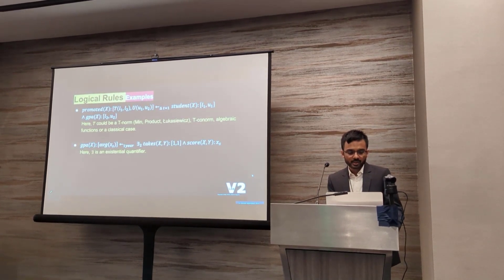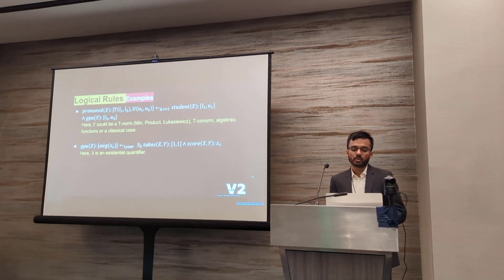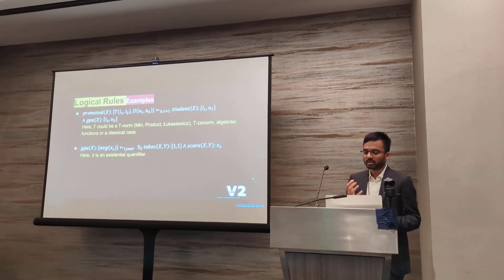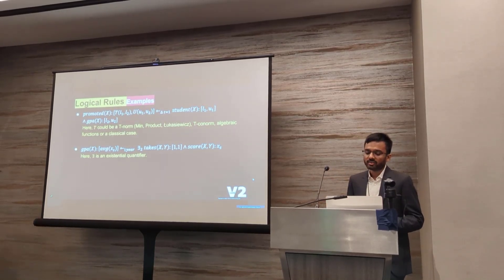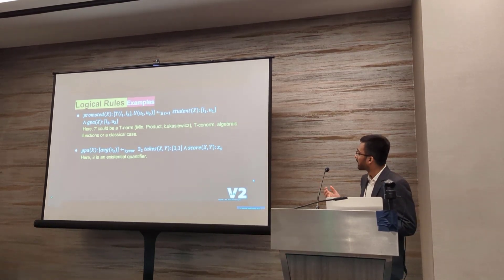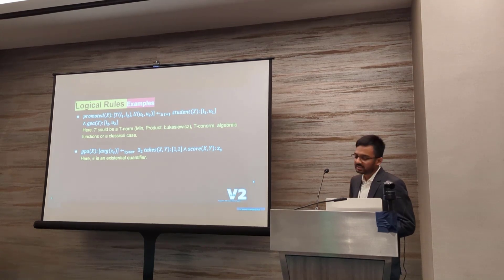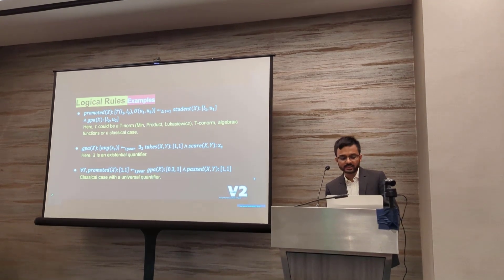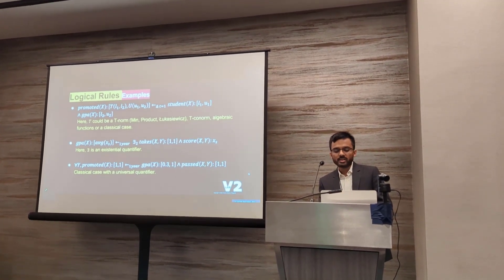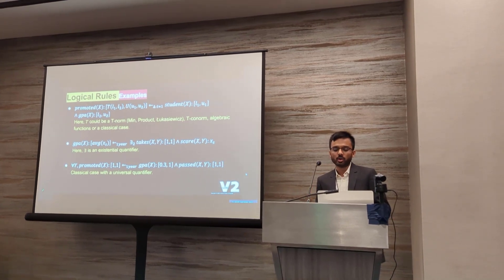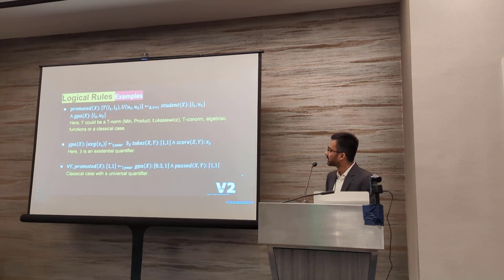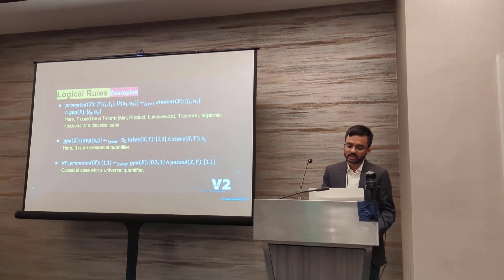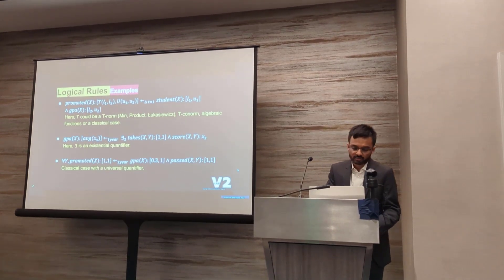A simpler version would be an algebraic function in the head, and this rule also has an existential quantifier. What this says is that X could be a student and Y is a subject: if X takes two different subjects and scores certain marks in them, then the GPA is an algebraic function of that. We also support a rule with a universal quantifier, which says that if a student passes all courses and is in the top 70th percentile of the batch, they will be promoted after a year.